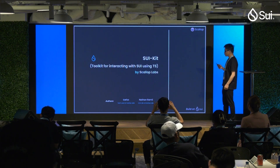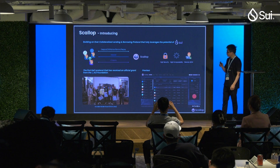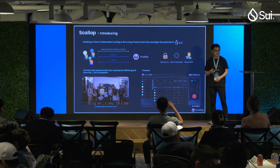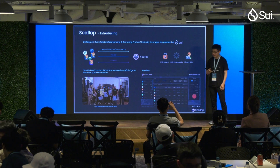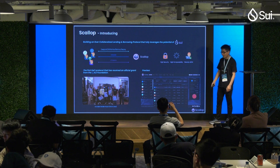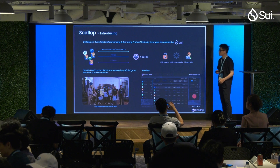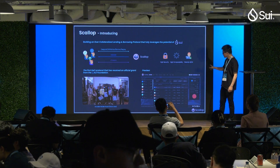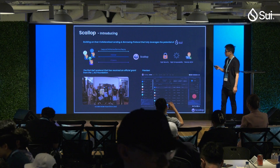Before we jump right in, I'd like to give you a brief introduction about our team. We are called Scallop, and just as Harrison mentioned this morning, we are a team that has joined the builder house from Denver to Vietnam and now Hong Kong. On the left corner of that picture is our picture at the Lisbon builder house. Our aim is to build a lending and borrowing protocol that fully leverages the potential of the Sui network. On the right corner of this slide is a snapshot of our web interface.